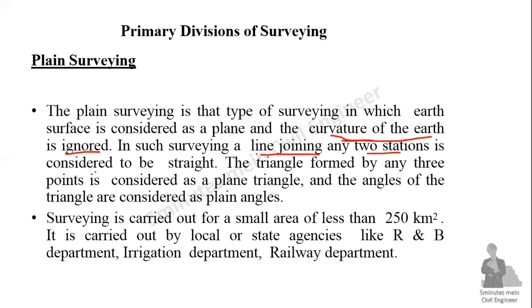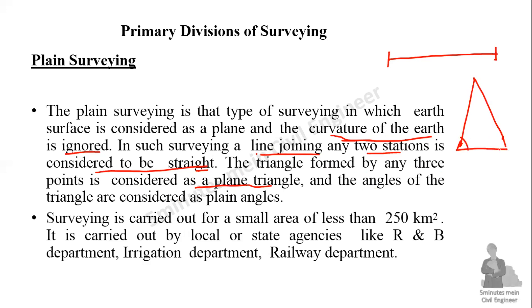In plane surveying, a line joining any two stations is considered to be a straight line. A triangle formed by three points is considered as a plane triangle and the angles are considered as plane angles. This type of surveying is applicable for areas up to 250 km², where the curvature of the earth can be ignored.